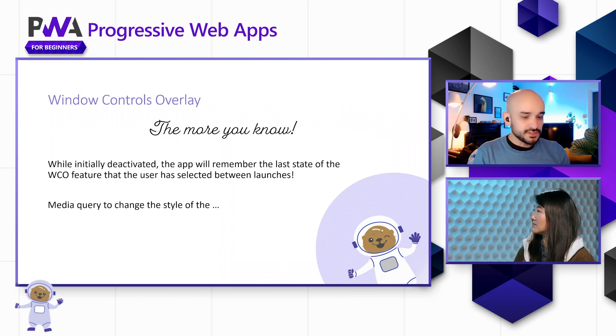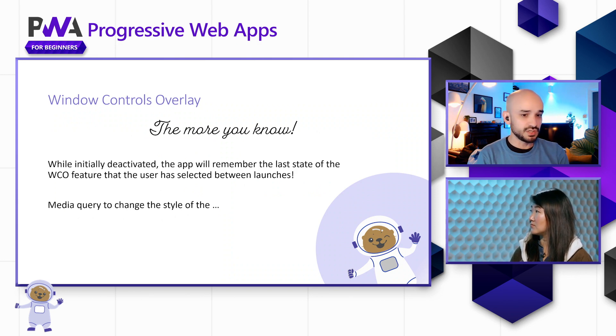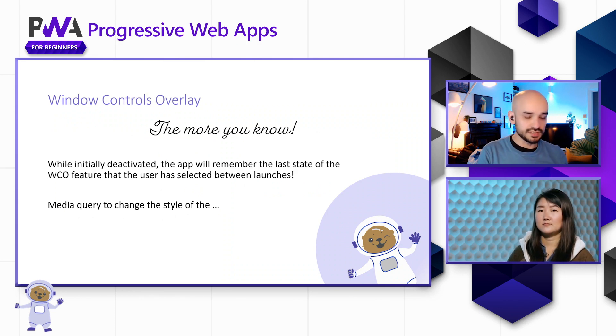Initially, for security reasons, the feature will be deactivated, but the application will remember the last state if you toggled it on or off. You install the app, it's off by default, but once you turn it on, if you close the app and reopen it, it remains on. So users have the option — if they prefer that 30 pixels of traditional title bar, they can still have it.